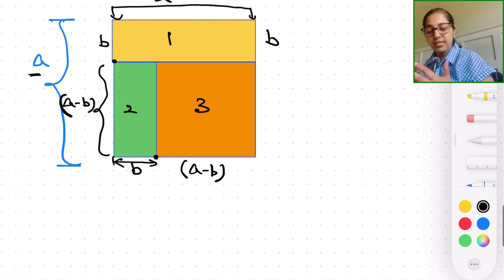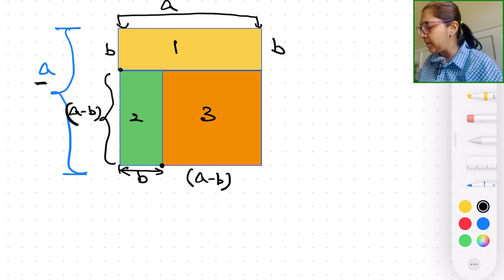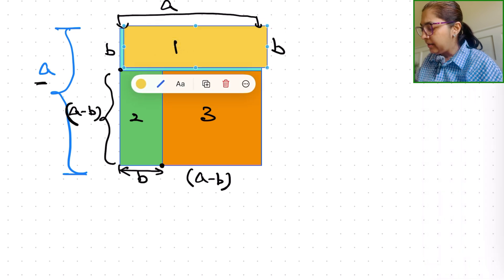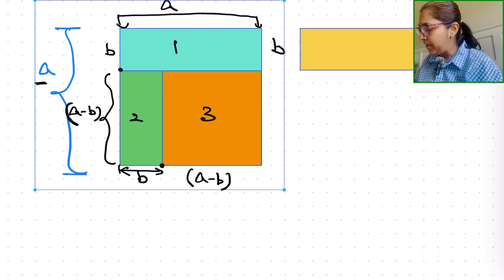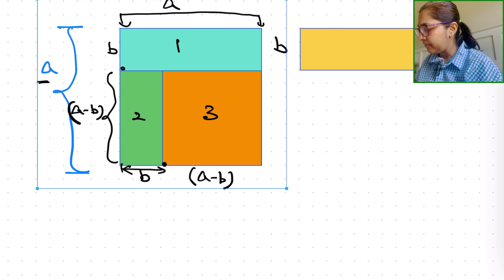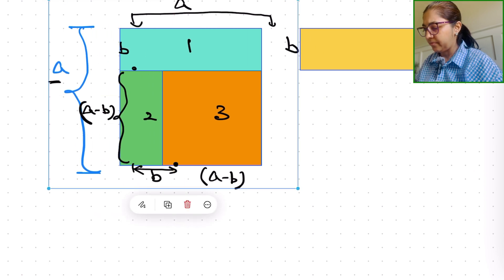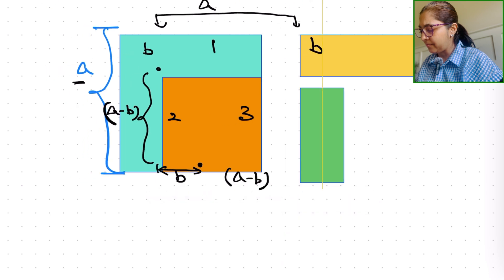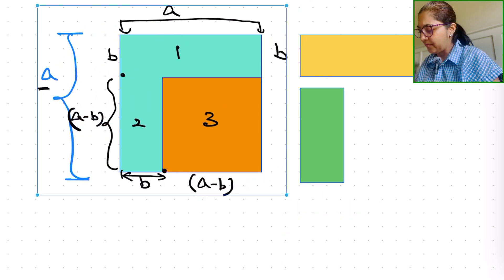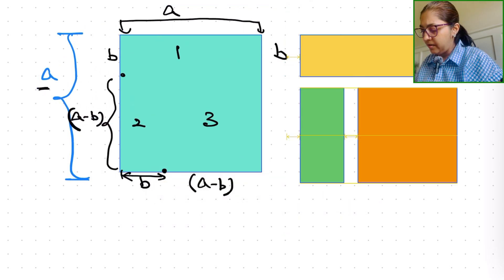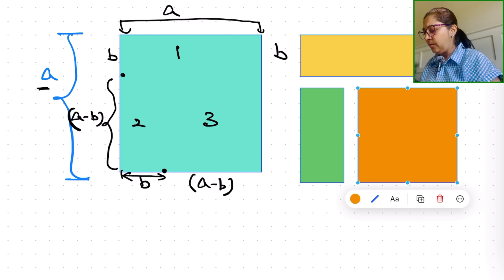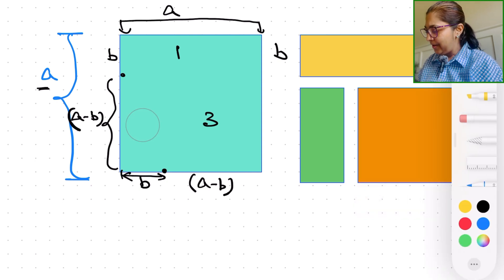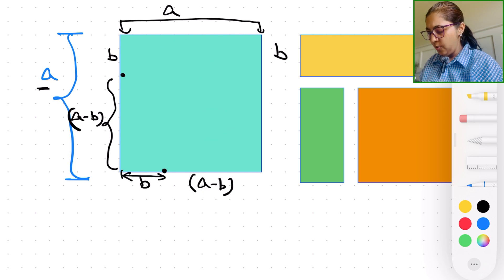So what is the area of the big square? a squared, a times a, if it's a side length of a. So as you can see, let's separate these pieces and now I have one, two, three. Let me go ahead and erase that written out there.